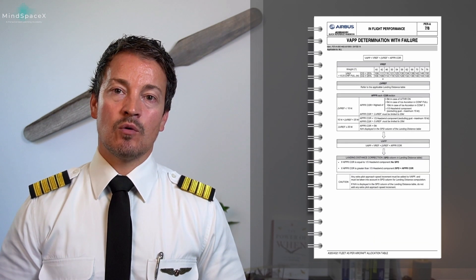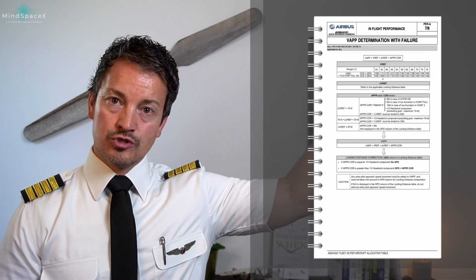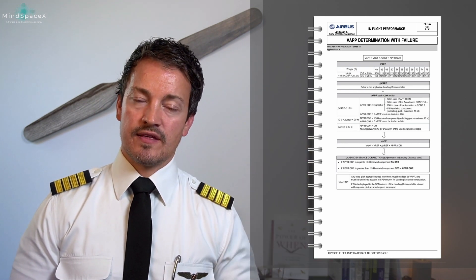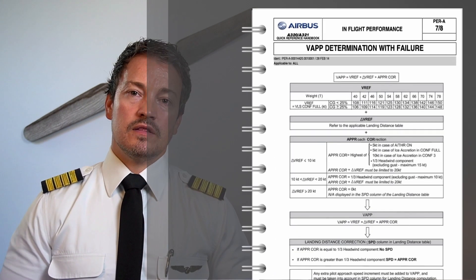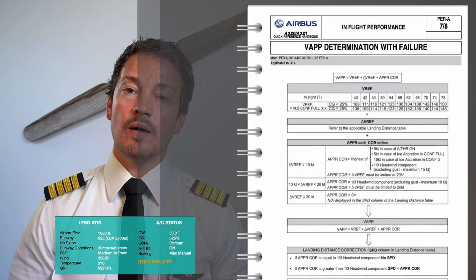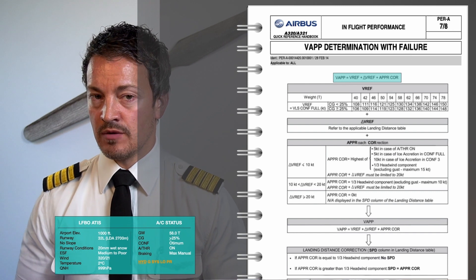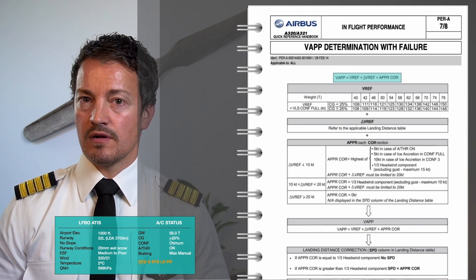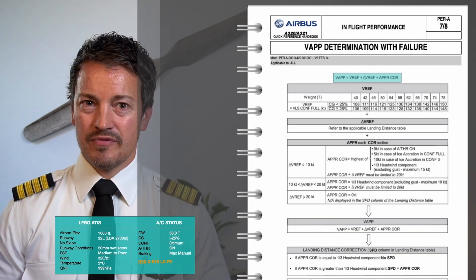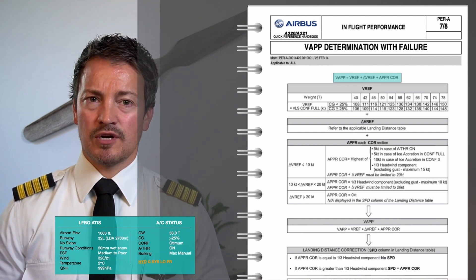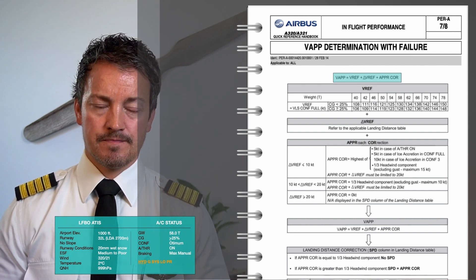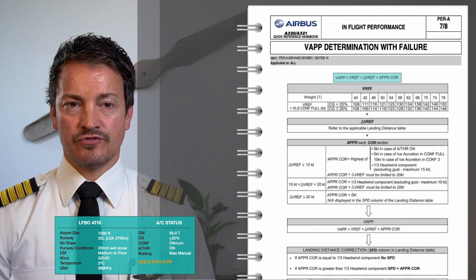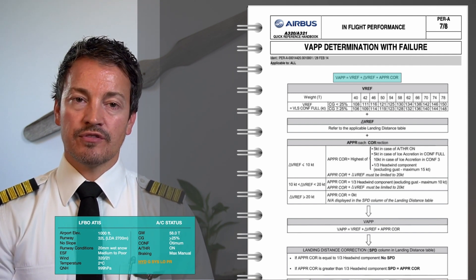We go to the page for V approach determination with failure — it is not the same table as for without failure. The formula here is: V approach = V ref + delta V ref + approach correction. Previously it said V approach = VLS + approach correction; here it says V ref because V ref, when you have failures, is considered VLS for config 4, regardless of whether you land config 3 or config 4.